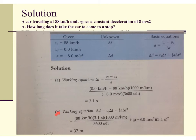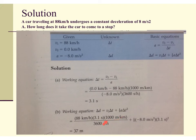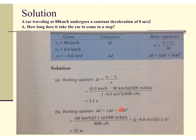Finally, to find the distance the car travels after the brakes are applied, we use: change in distance equals initial velocity times change in time plus one-half times acceleration times time squared. With an initial velocity of 88 kilometers per hour, a time of 3.1 seconds, using the conversion of 1,000 meters per kilometer and 3,600 seconds per hour to cancel units, plus one-half times negative 8 meters per second squared times 3.1 seconds squared — doing the math, we get an answer of 37 meters.